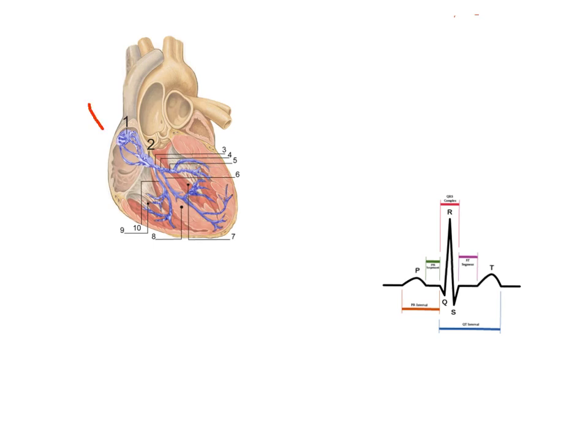So again, this is the SA node here, the intranodal pathways, the AV node, you have the right and left bundle branches, and then you have the hisperkinje, the ventricular fibers occurring. The P wave is depolarization of the SA node in the atria. The QRS complex is that wave of depolarization traveling through the bundle branches and the ventricles. And then the T wave is ventricular repolarization.